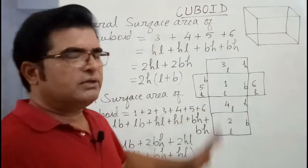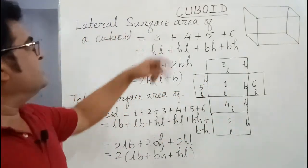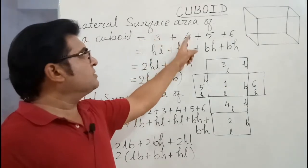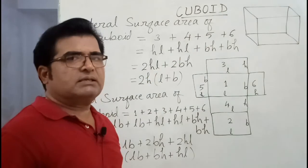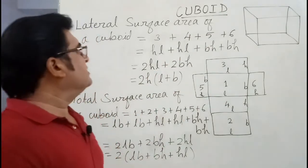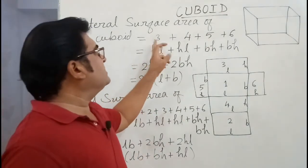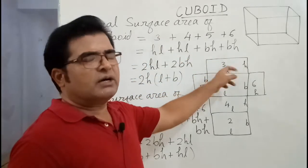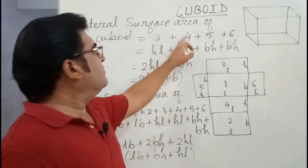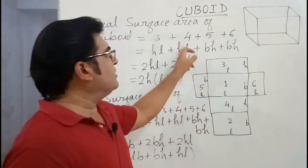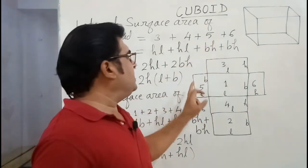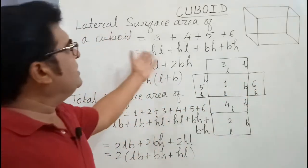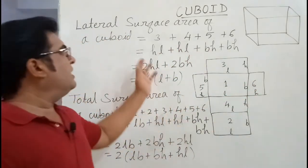So we write lateral surface area of a cuboid equal to area of face number 3 plus 4 plus 5 plus 6. And they all are rectangles. As I told you, in face number 3 we use H into L or L into H. 4th also the same thing because they are congruent. Face number 5, B into H we have used. 6th also B into H. So we have to add them.